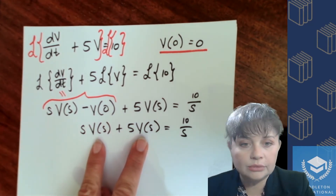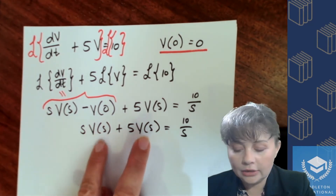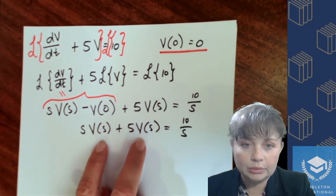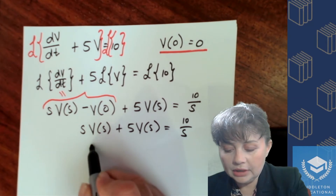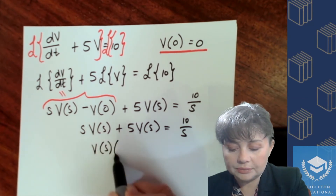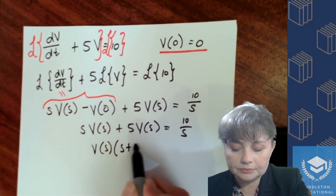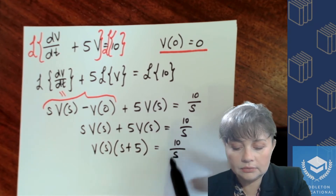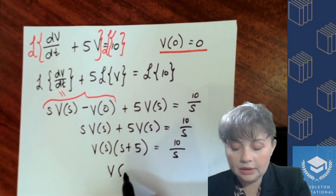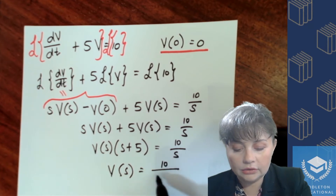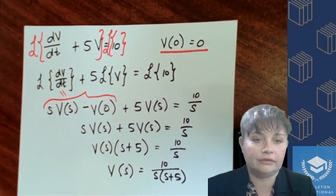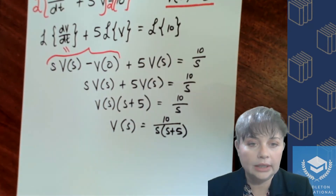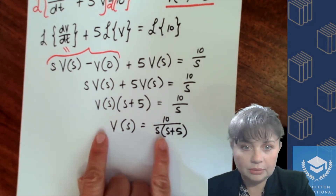So all you are left with is s·V(s) plus 5·V(s) equals 10 over s. You've got two terms and the Laplace transform V(s) is common to both of them, so we can factor it out, which means that V(s) equals 10 over s times (s + 5), i.e., 10 over s(s + 5).